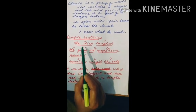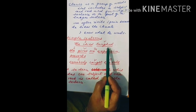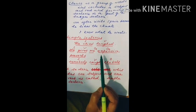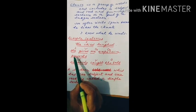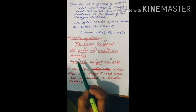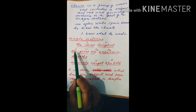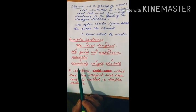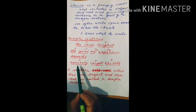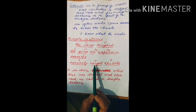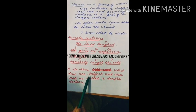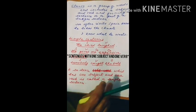'The child laughed.' Here, 'the child' is the subject and 'laughed' is the verb — one subject, one verb. 'She gives me expensive presents.' 'She' is subject, 'gives' is verb, 'me' is indirect object, 'expensive presents' is direct object — only one subject and one verb. 'Somebody caught the ball.' 'Somebody' is subject, 'caught' is verb, 'the ball' is object — again, one subject and one verb. So a simple sentence is one which contains only one subject and one verb.